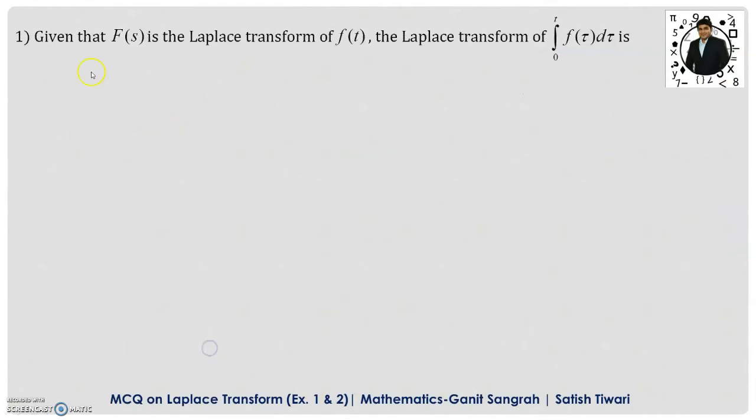Example number 1: Given that f of s is the Laplace transform of f of t, then the Laplace transform of integral 0 to t, f of tau d tau is?